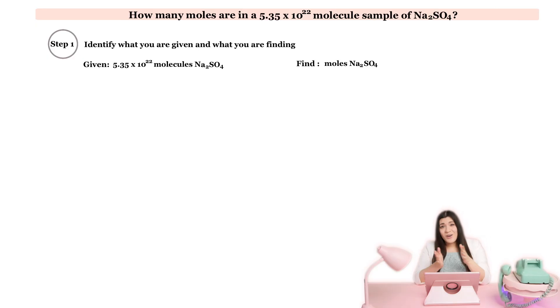For any word problem that you see, always identify what you're given and what you're finding. So that's step one. We will literally just see what is this question giving us to start with and then what are we finding overall. So what this question is saying is we are given how many molecules the sample has. That's what we're starting with, and then we're asked to find the amount of moles overall in this compound.